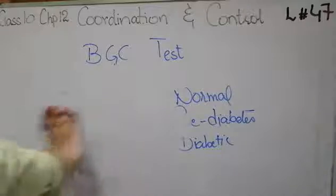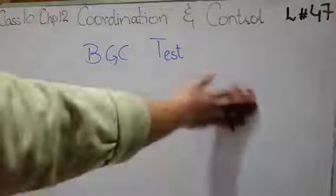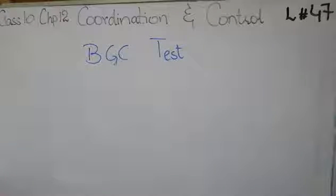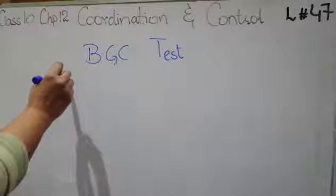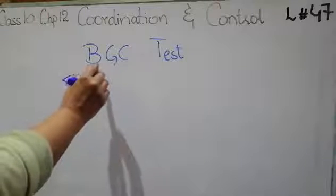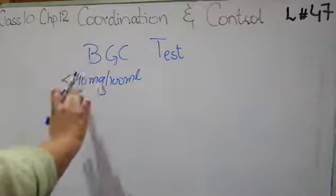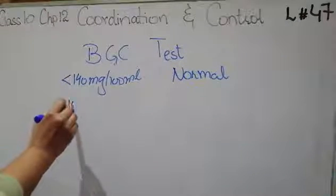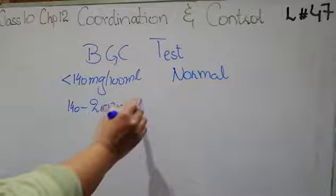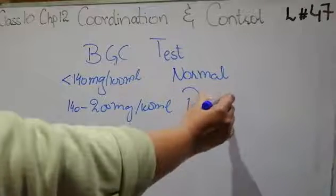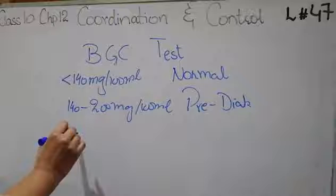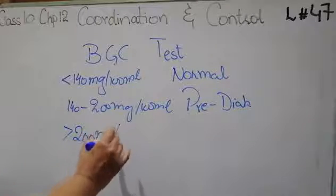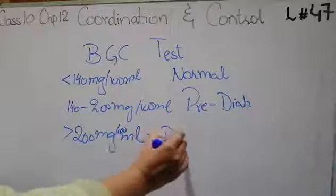The BGC test can also be conducted after 2 hours following a 75-gram glucose drink. If the result is less than 140 mg per 100 ml, the diagnosis is normal. If it is between 140–199 mg per 100 ml, the person is pre-diabetic. If it is 200 mg per 100 ml or more, the person is diabetic.